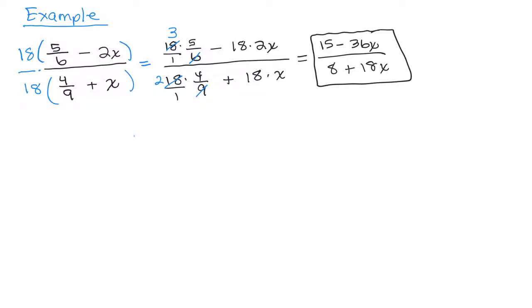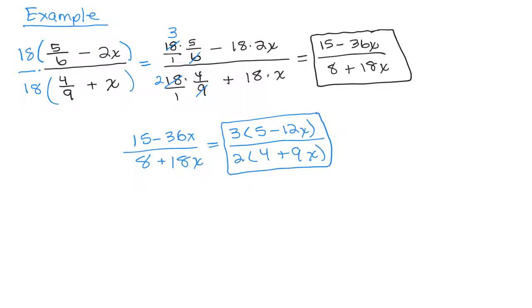So for instance, 15 minus 36x over 8 plus 18x, if you did factor the numerator, you could factor out a 3, which is 5 minus 12x. And in the denominator, you could factor out a 2, which is 4 plus 9x. And there are no common factors. So this would be the answer if you left the numerator and denominator in factored form.